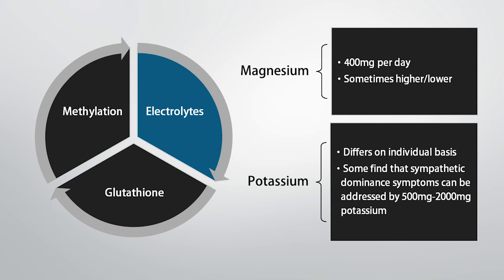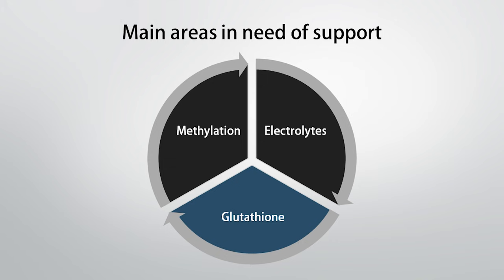The supplemental B vitamins and electrolytes are likely to apply to every different form of thiamine. However, when we look at glutathione and methylation, this is primarily going to relate to the TTFD form, which is generally the most potent but also most likely to cause side effects. I think one reason someone might feel sluggish, tired, fatigued, or toxic when taking the TTFD form of thiamine relates to glutathione status.